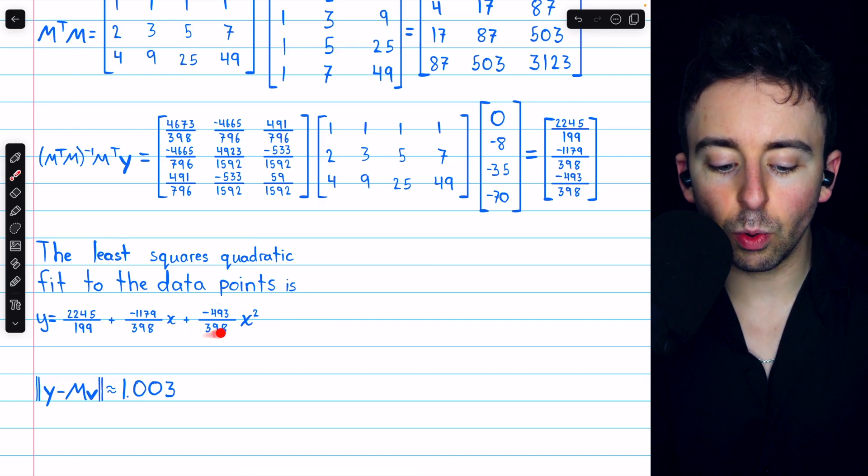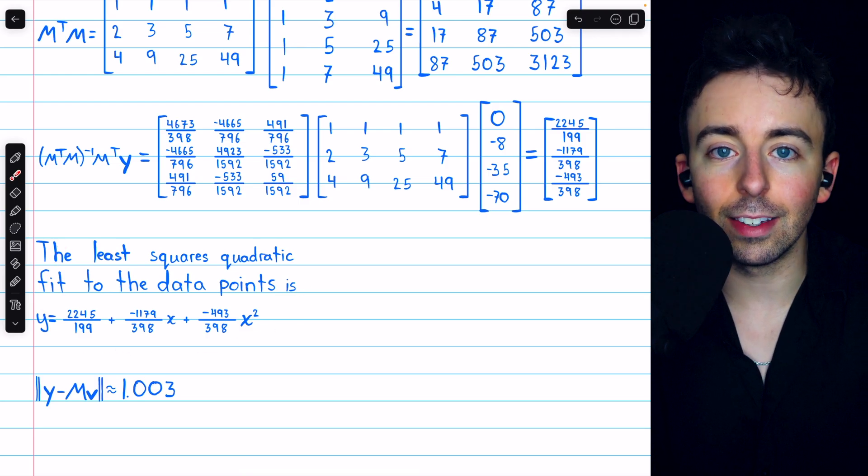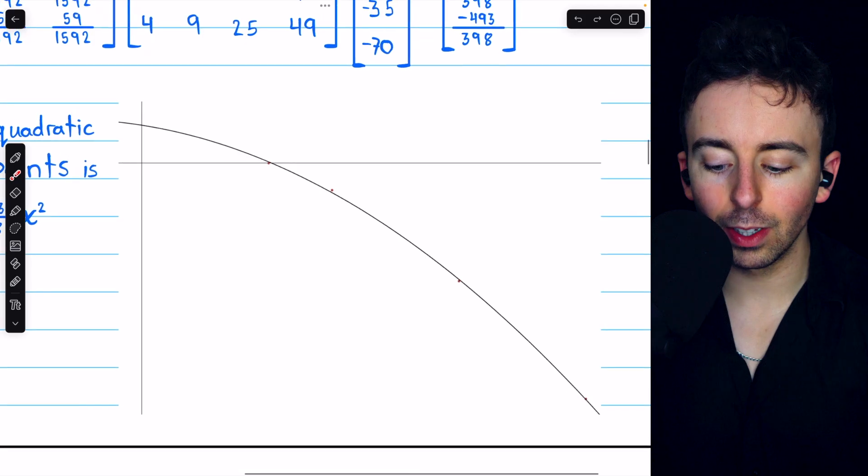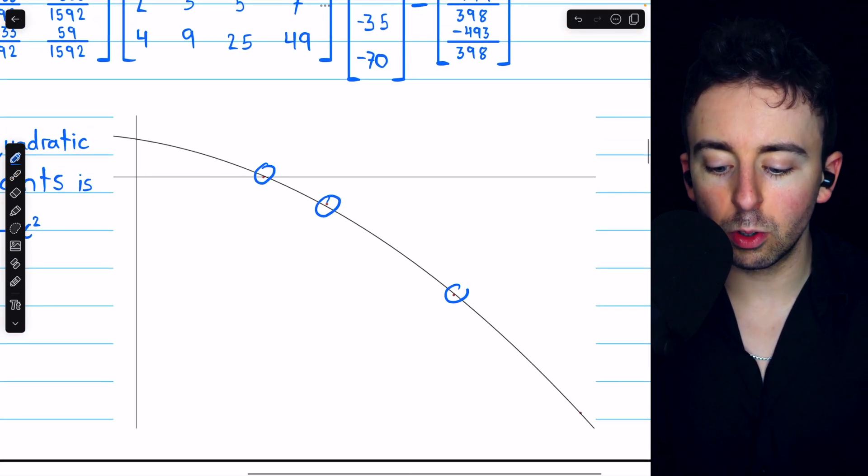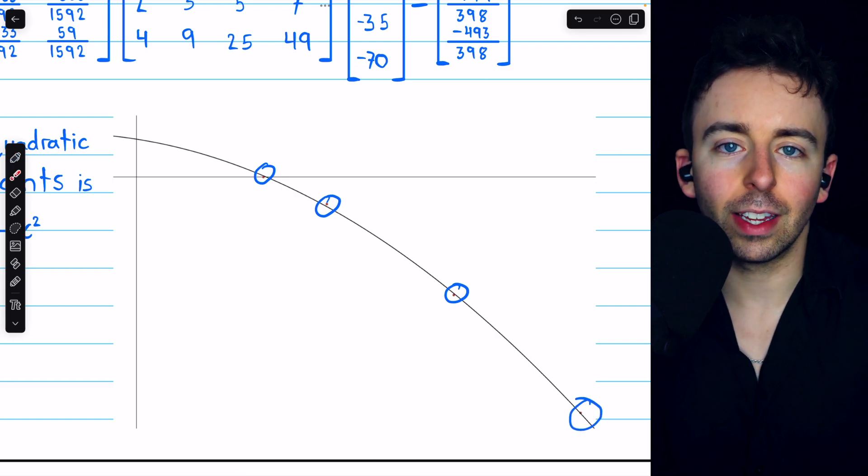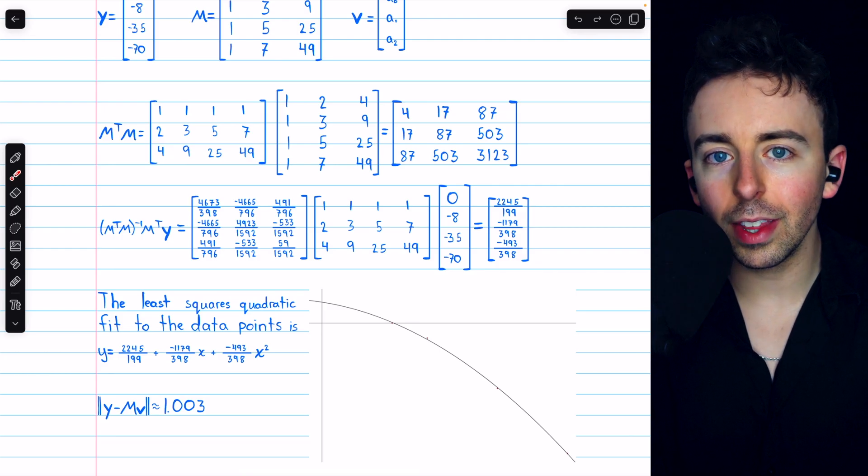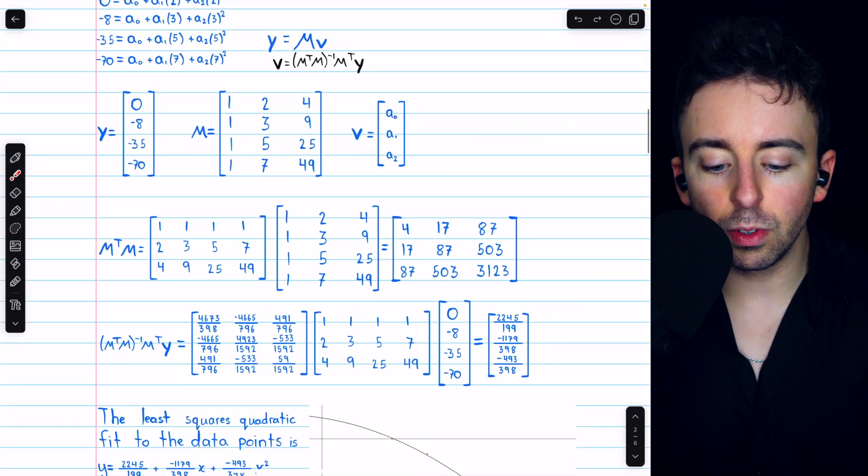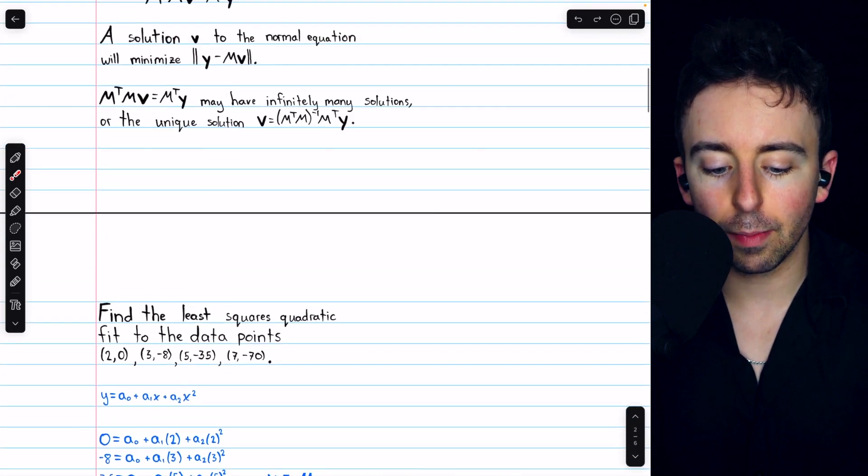So this is the least squares quadratic fit to the given data points, and we can compute that the least squares error is about 1.003. And here is a graph of the data points and our least squares quadratic fit. You can see that the data points are very close to our quadratic. This is a pretty good fit to the data points. And in fact, since we used our methods of linear algebra, we know that this is the best possible quadratic fit to these data points. So that's how to use the normal equation to find a best fitting polynomial to a set of data points.